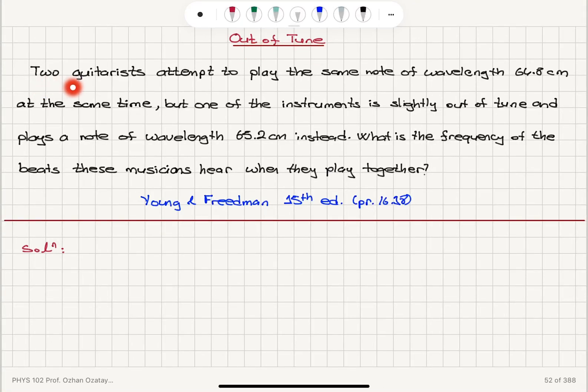Out of tune. Two guitarists attempt to play the same note of wavelength 64.8 cm at the same time, but one of the instruments is slightly out of tune and plays a note of wavelength 65.2 cm instead. What is the frequency of the beats these musicians hear when they play together? The propagation speed of sound V